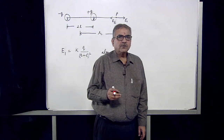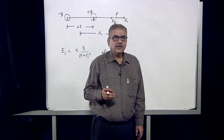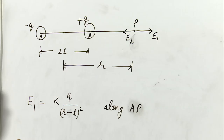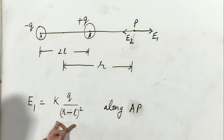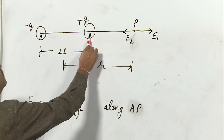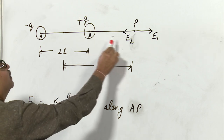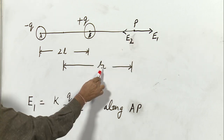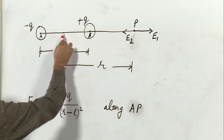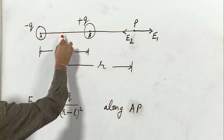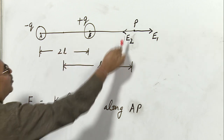Let us find out the electric field due to the positive charge at point P. Let it be E1. Then E1 will be equal to KQ upon (R minus L) whole square, directed along AP. Why R minus L? Because R is the distance from the center of the dipole to point P, so the distance between point B and P will be R minus L.